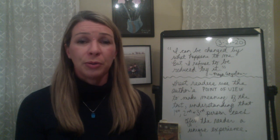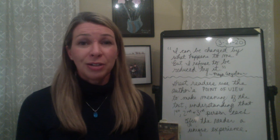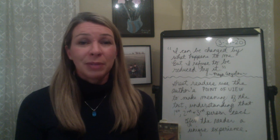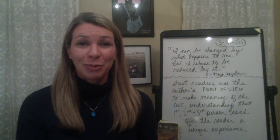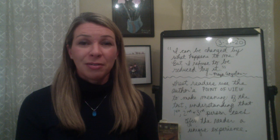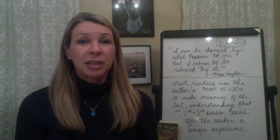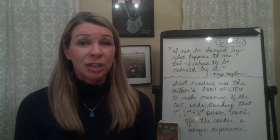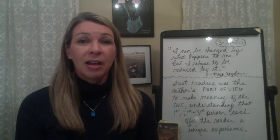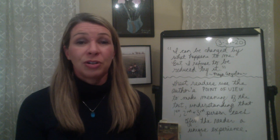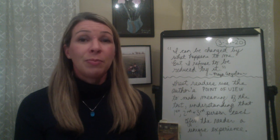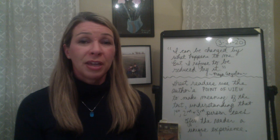Third person point of view is where the narrator tells the story. Sometimes it's limited, meaning the narrator only offers us a limited amount of knowledge. Whereas third person omniscient is where the narrator helps us to know what all of the characters are saying and doing — but more importantly, what they're thinking and feeling.